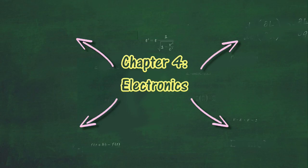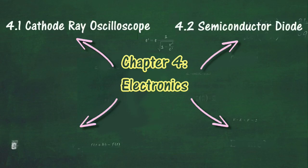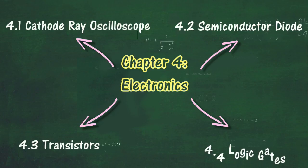There are four main sections in this chapter: 4.1 Cathode Ray Oscilloscope, 4.2 Semiconductor Diode, 4.3 Transistors, and 4.4 Logic Gates.